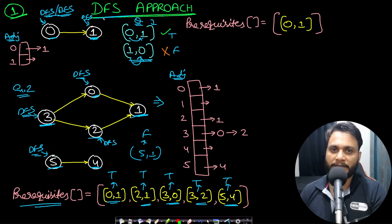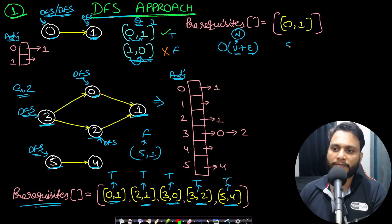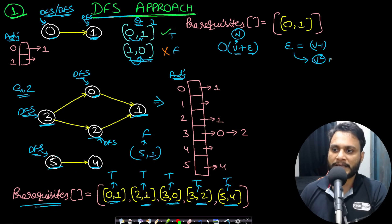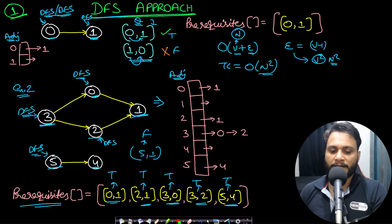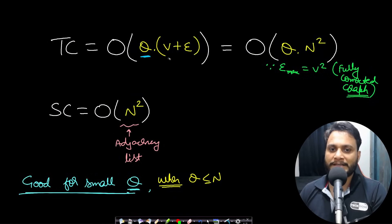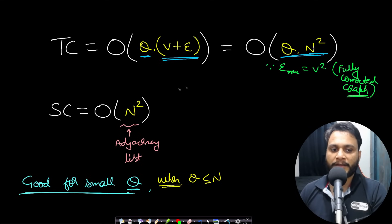This can be solved by DFS or BFS traversal. Using a visited array, each DFS call takes O(V + E) time where V is vertices and E is edges. Since in a dense graph E can be O(V²), each DFS call is O(n²). With Q queries, total time complexity is O(Q · n²), and space complexity is O(n²) for the adjacency list. This technique works well when Q is small — specifically when Q ≤ n.